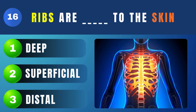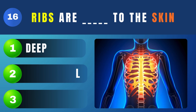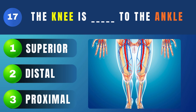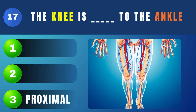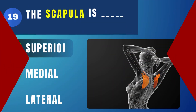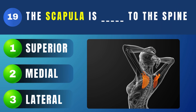Ribs are what to the skin? Deep. The knee is what to the ankle? Proximal. The wrist is what to the elbow? Proximal.